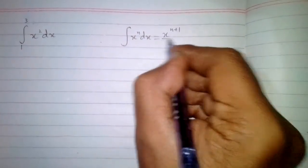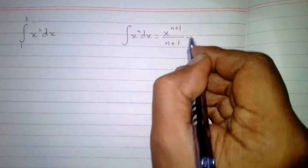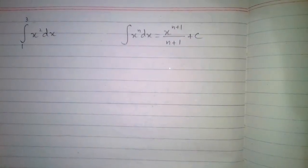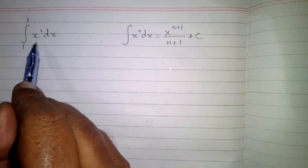Over n plus 1 plus C, where C is the constant of integration. But when we are doing definite integral, we will not write this constant.